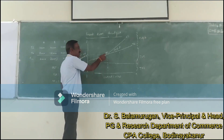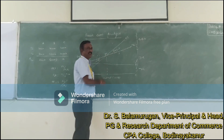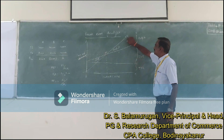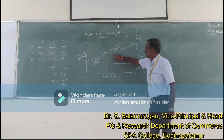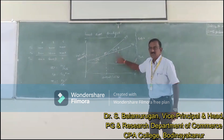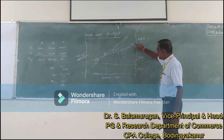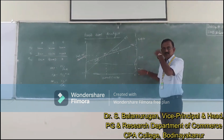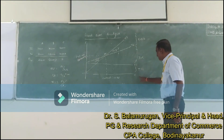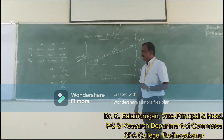Looking at the chart, below the break-even point is called the loss area. Above the break-even point on the Y axis side is called the profit area. This is the profit margin. The area beyond the break-even point is called the margin of safety area. The total variable cost and total fixed cost combined are called the total cost.